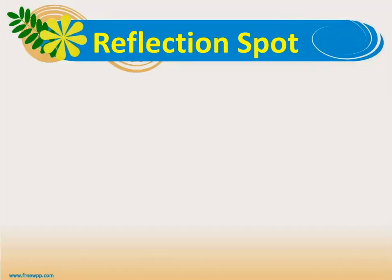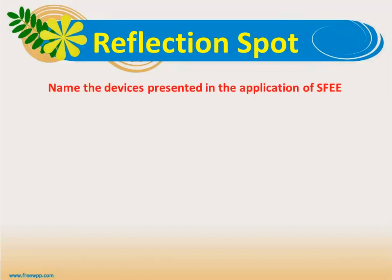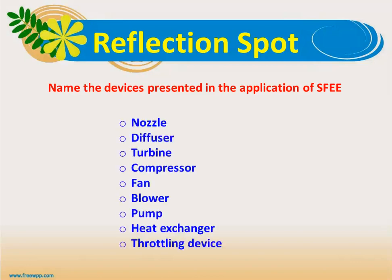Reflection spot: name the devices covered in the application of the steady flow energy equation. The answer is: nozzle, diffuser, turbine, compressor, fan, blower, pump, heat exchanger, and throttling device.